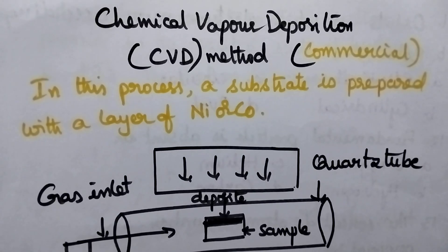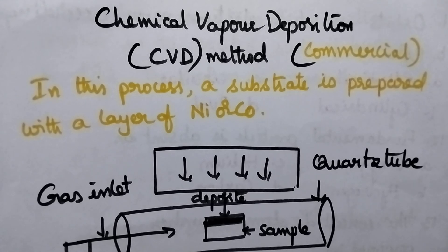Hello students, welcome back to my channel. In this video, I am going to discuss in brief about the chemical vapor deposition method, which is also known as CVD method. It is highly useful for the production of carbon nanotubes commercially.